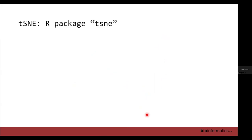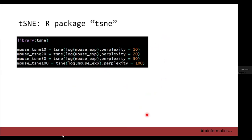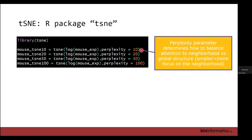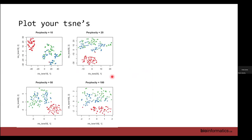Changing the perplexity — say from 10 to 100 — changes how the plot looks: clusters can appear closer together or more separated. As you increase the value, clusters become more distant from each other, potentially showing better separation.